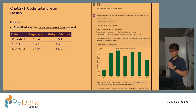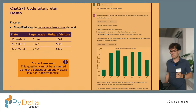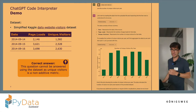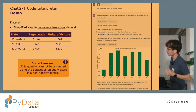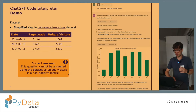This might look nice overall, but there's a big problem. The correct answer would have been: this question cannot be answered using the dataset, as unique visitors is a non-additive metric. What I mean is, if a user visited the website each day in the year, they would have been counted 365 times in this chart — a complete overestimation. So overall, I'm not very concerned that Code Interpreter is going to replace data analysts anytime soon.